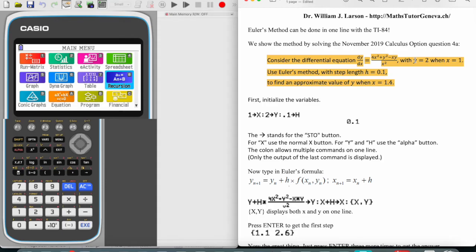We know that the solution of the differential equation is y equals 2, and the step size is 0.1. We want to approximate the value of y when x equals 1.4. So how do we do that on the calculator without going through the hassle of doing the whole table by hand?